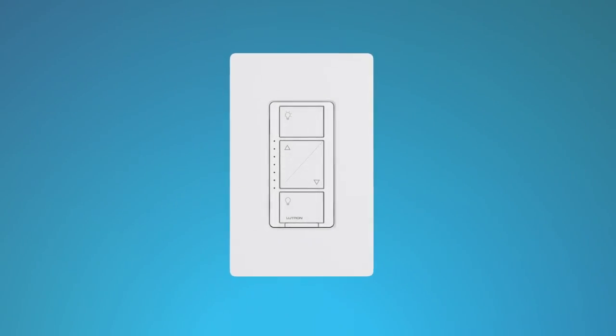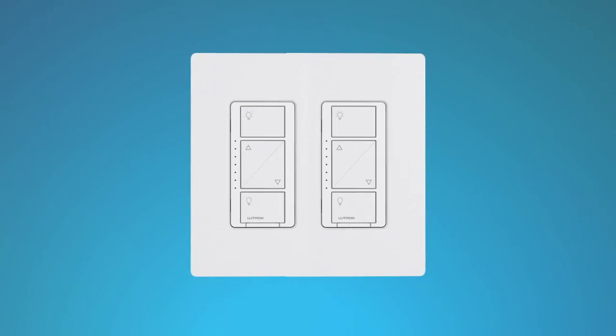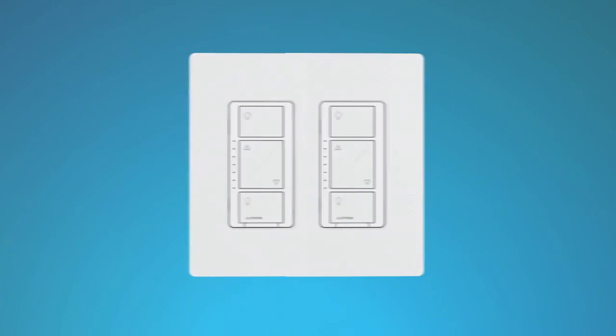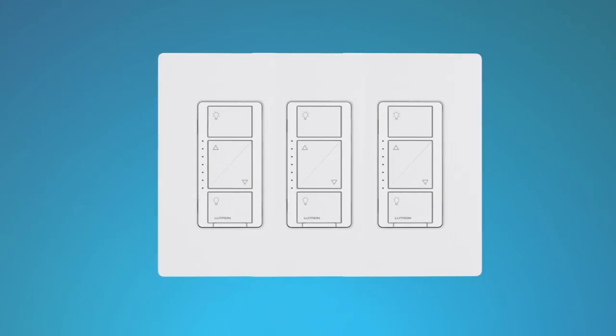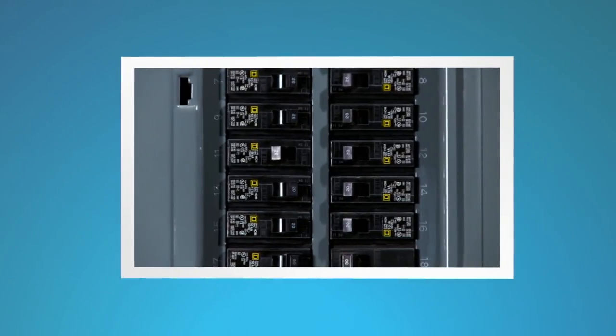If you installed the dimmer next to other dimmers or switches, you'll need to install a wall plate with the correct size and number of openings to accommodate all the devices. Finally, turn the power back on at the circuit breaker.